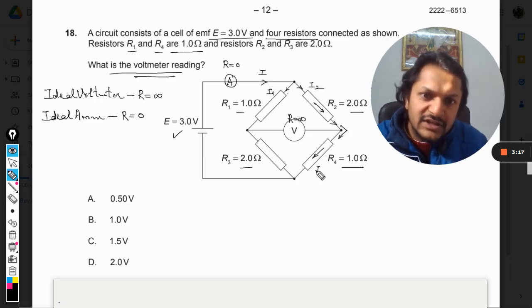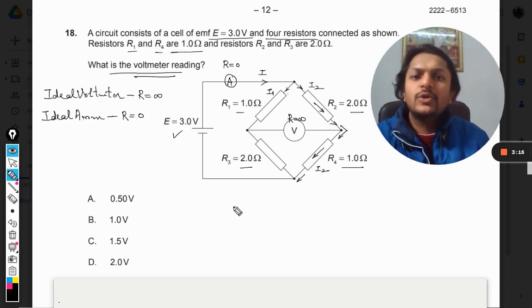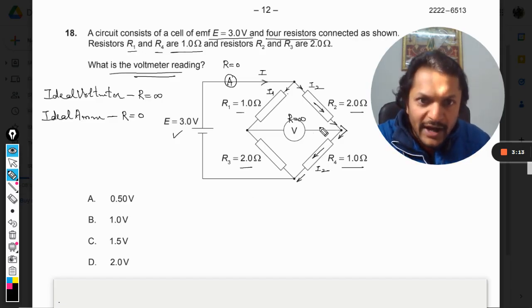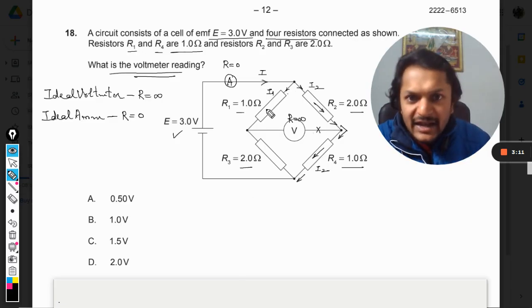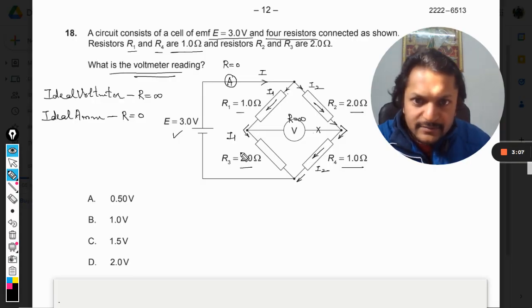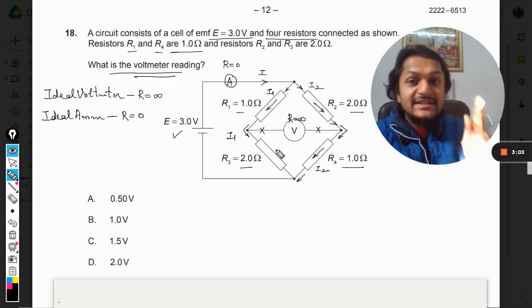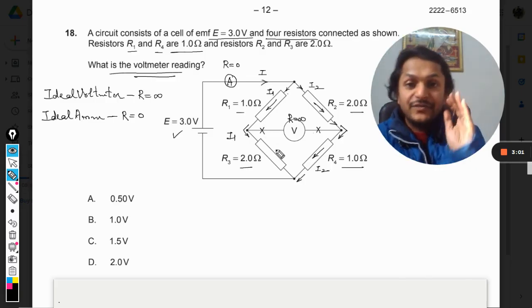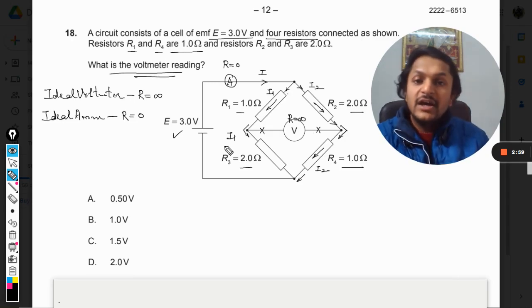So the I2 current will pass through the resistor R2 and it will straightforward pass over to R4. So this is again I2 and I2 is going here, so no current is now entering in this branch. As per I1 is concerned, it will just pass over like this and I1 is not going to enter into this branch.